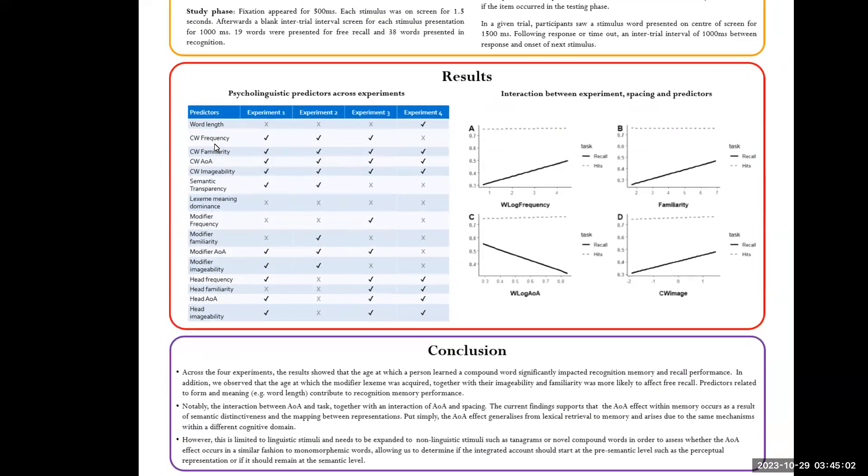So what we see is something kind of cool. Overall, we see that measures of frequency from the layout, AOA, and imageability of the compound word contribute all over across free recall and recognition memory, irrespective of spacing. Except for frequency, which doesn't contribute to spaced recognition memory. Word length only contributes to spaced recognition memory. Semantic transparency only contributes to free recall together with modifier imageability.